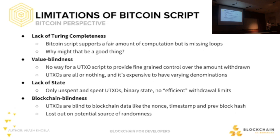What are the limitations of Bitcoin script that lead to this messiness? There's a lack of Turing completeness — Bitcoin script does not support loops. Why is that a good thing? In a distributed decentralized system, you want to make sure people aren't able to DDoS your network, and one way to prevent that is to remove loop functionality. There is still a way for people to DDoS your network, but it requires writing a lot of code that does the equivalent of a loop — it's not as easy.